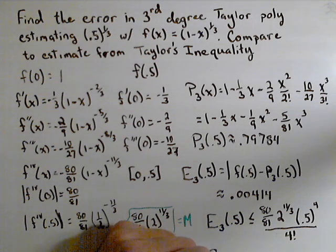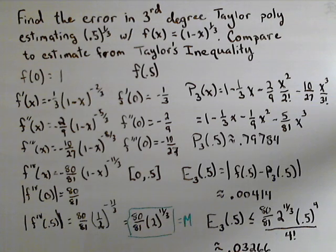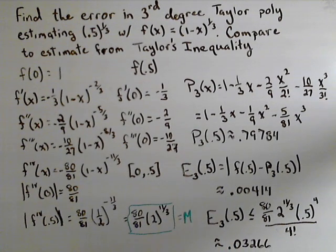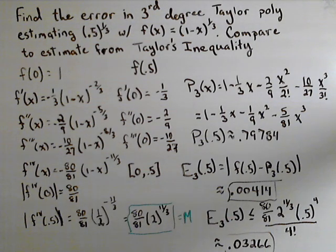I've already calculated this out. So this comes out to be 0.0266. And we see that our error bound is greater than our actual error, which is what we expect to have happen.